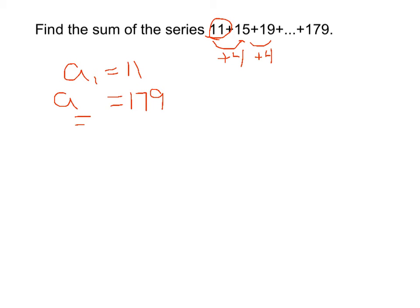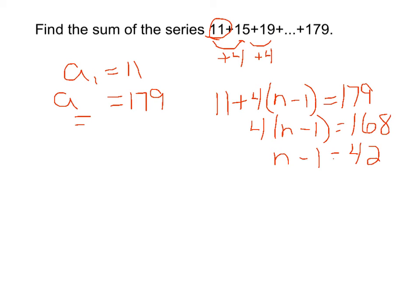Well, we can figure that out, because we know that if we start at 11 and add 4, n minus 1 times, that would have to equal 179. Solving this equation quickly, we get 4 times n minus 1 equals 168. Dividing by 4 tells us that n minus 1 has to equal 42. Therefore, n is 43, telling us that that last term of 179 is the 43rd term.